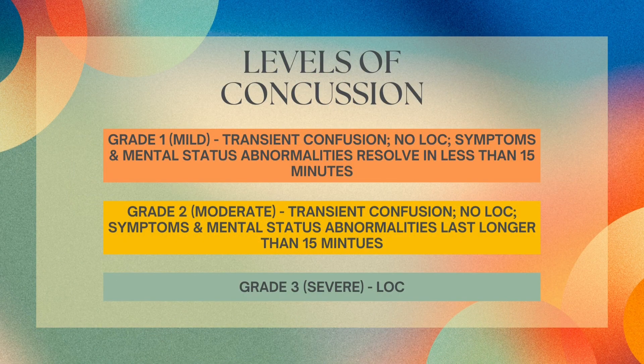Next we have levels of concussion. Grade one, which is mild, is when there's a little bit of confusion and no loss of consciousness, with symptoms and mental status resolving in less than 15 minutes. Grade two is moderate — there's confusion, still no loss of consciousness, but symptoms and mental status last longer than 15 minutes.